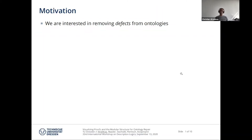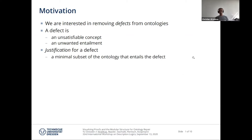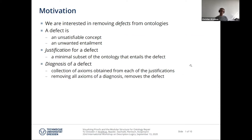The idea in general is the following. We would like to be able to fix ontologies with respect to certain defects that occur in them. Defects for us are either unsatisfiable concepts or any unwanted entailment. Each of these defects would have at least one justification in the ontology, and justifications are minimal subsets of the ontology that entail the defect. One way to get rid of these defects is to take a collection of axioms that appear in each of these justifications and remove them from the ontology, which will then result in a repair — a fixed ontology that doesn't have this defect.